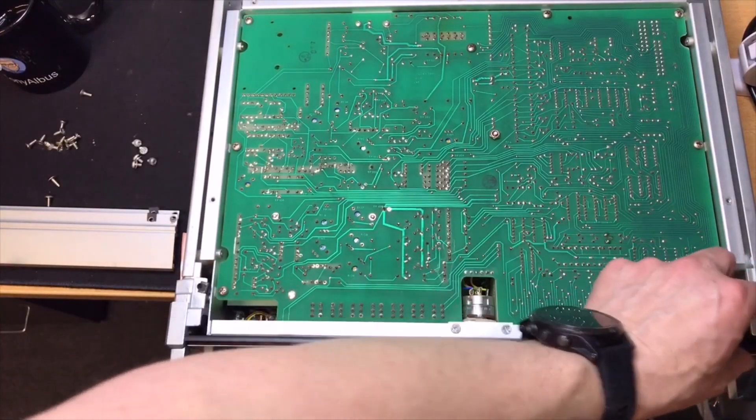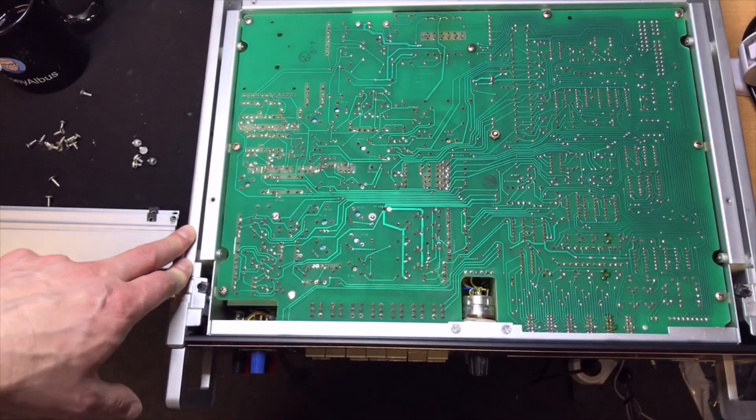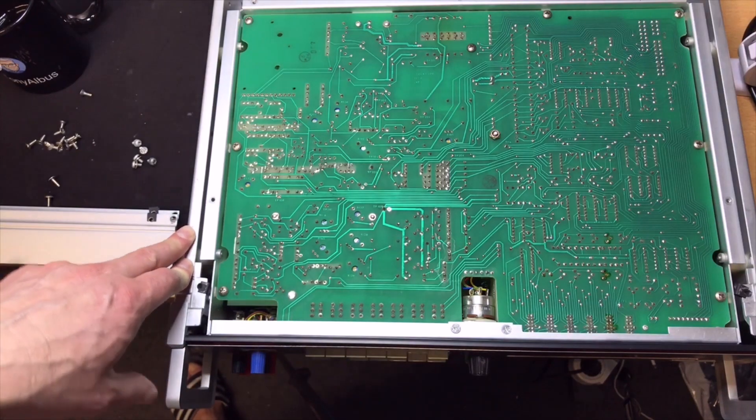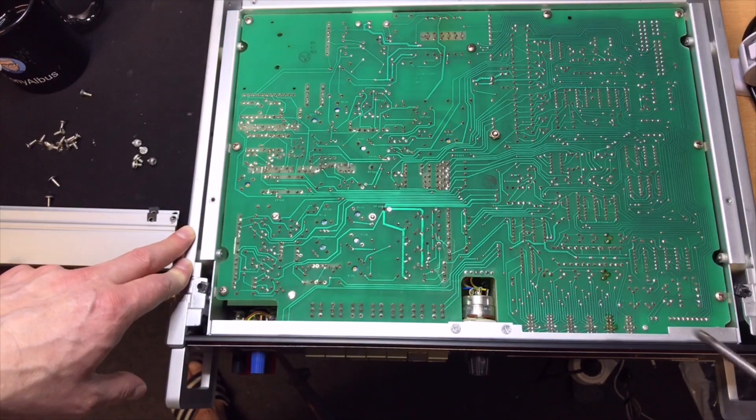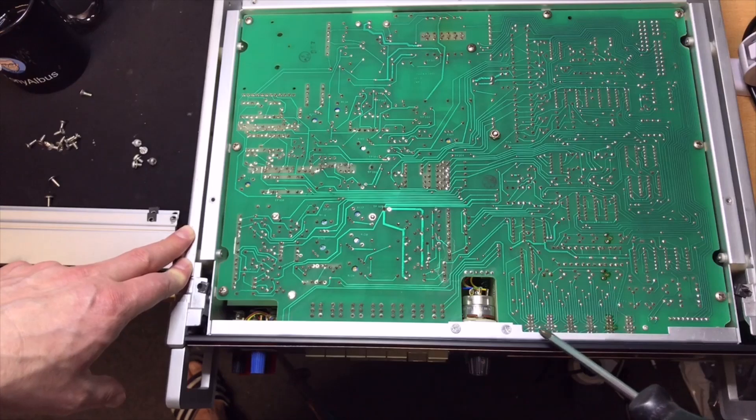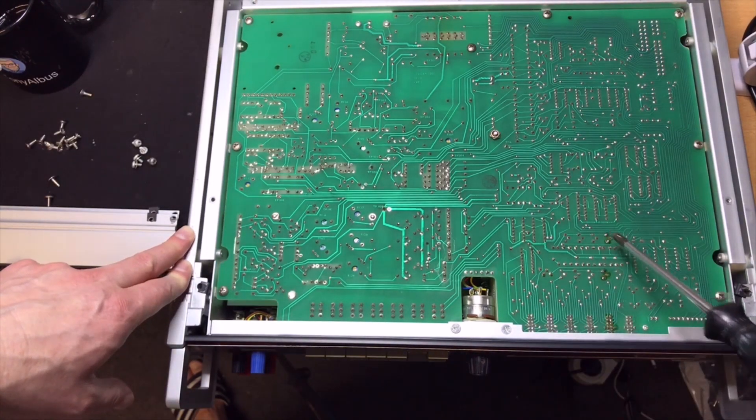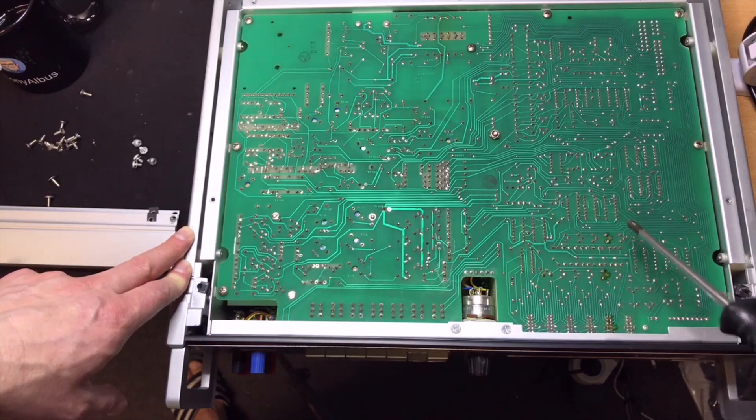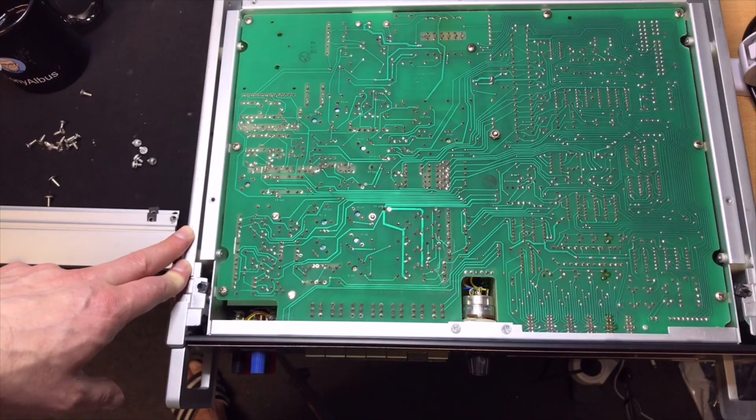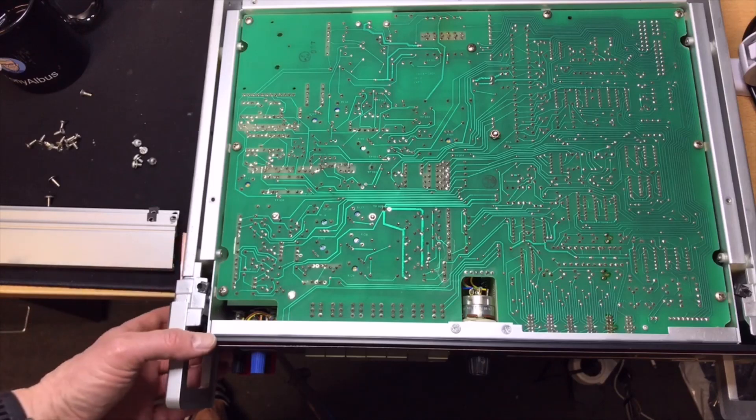Okay, plate removed, the front strip removed. And now we can have a better look at everything. It seems that they have done some repairs here. I think this is in the Nixie area. And here, they replaced two transistors, it seems. The rest, it looks still very, very nice.